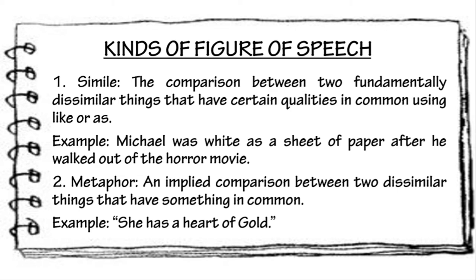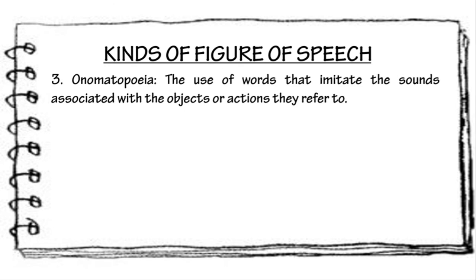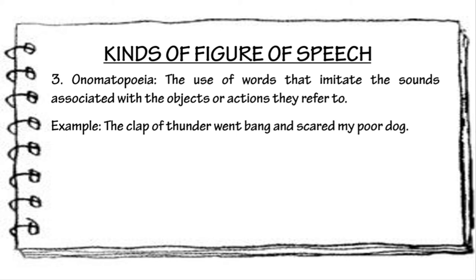Next, we have onomatopoeia. Onomatopoeia is the use of words that imitate the sounds associated with the objects or actions they refer to. In other words, it is a word that describes a sound and actually mimics the sound of an object. Example: The clap of thunder went bang and scared my poor dog. In the given example, we use the word 'bang' to describe the sound of thunder.